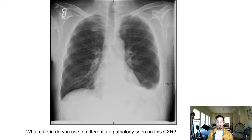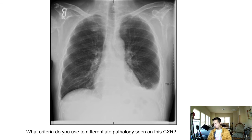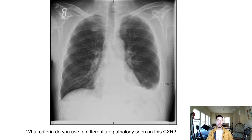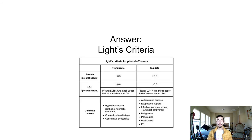What criteria do you use to differentiate the pathology on this chest X-ray? If you can't see the costophrenic angle on the left, you're thinking pleural effusion. How do you differentiate it? Light's criteria — exudative versus transudative. With exudative effusions you may need to place a chest tube and potentially use TPA to break up the fibrin, for example if it's an empyema.